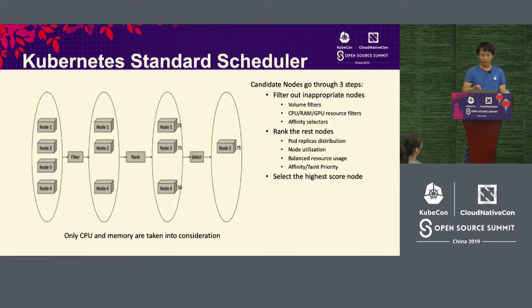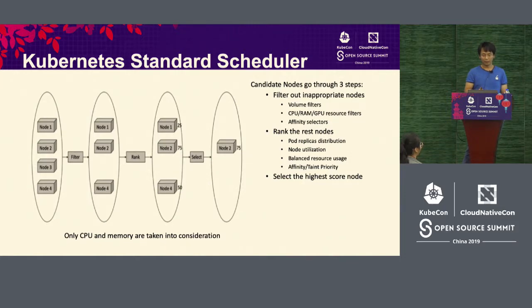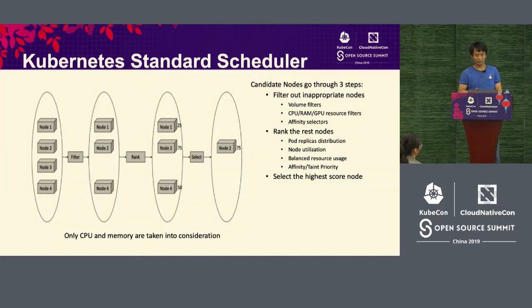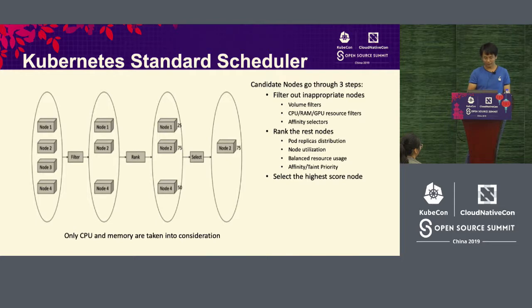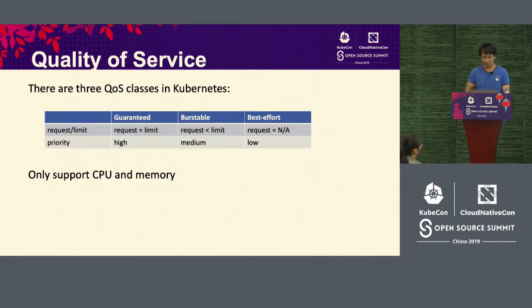The second step is that the remaining nodes are scored and ranked. Several principles are applied: node replica distribution, whether it is even or not; utilization of the node; whether resource usage is balanced; and node affinity and taint priority. The highest-ranking node is selected, and the pod is deployed on it.